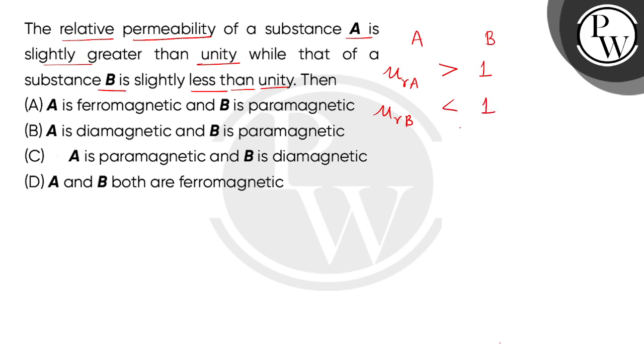So we have to know that there are three types of magnetic substances: first are diamagnetic, second is paramagnetic, and the third is ferromagnetic. So what is the nature of A and B substances in these three types?